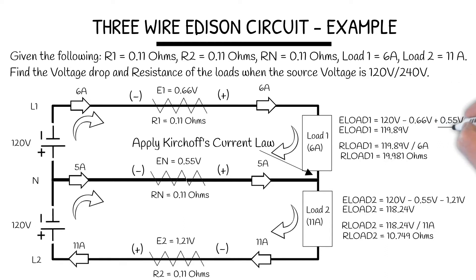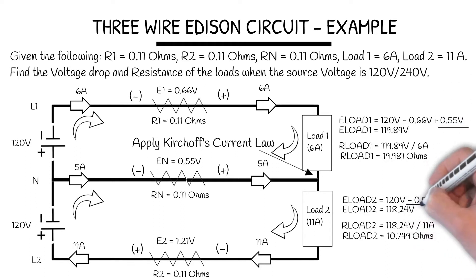As you can see, the polarity of the neutral will determine whether we add 0.55 or subtract 0.55.